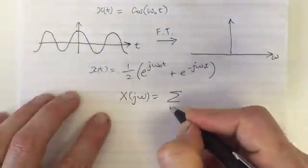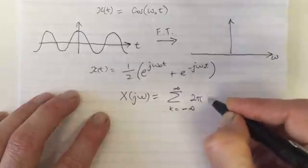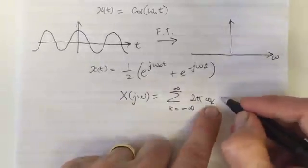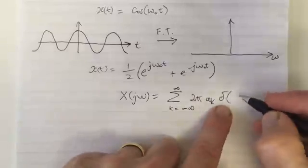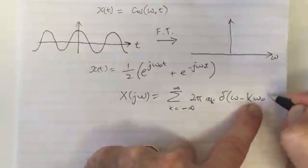has this formula: the sum from k=-∞ to ∞ of 2π times a_k (these are the Fourier series coefficients) times the delta function at ω - kω₀.